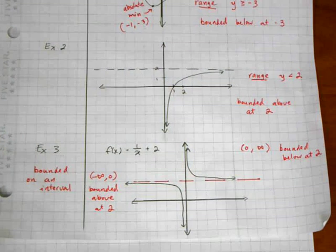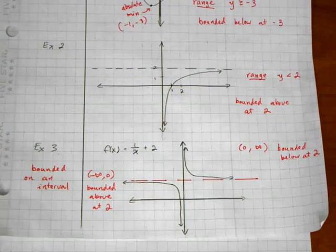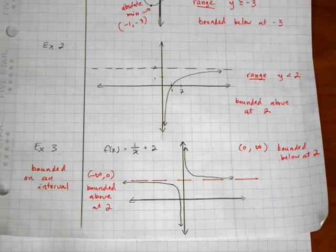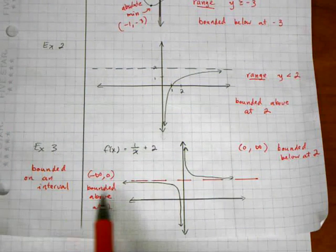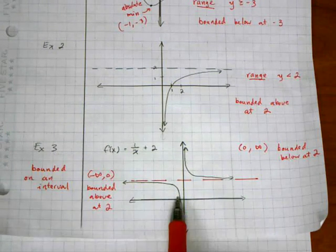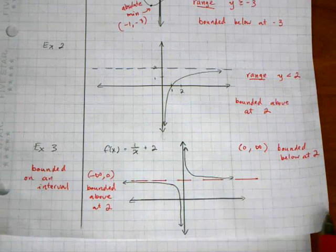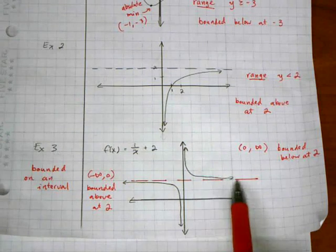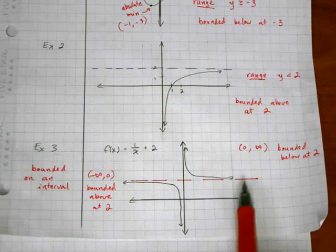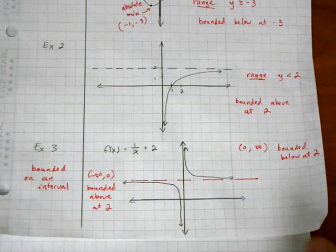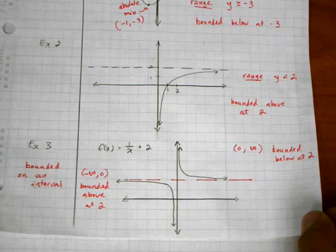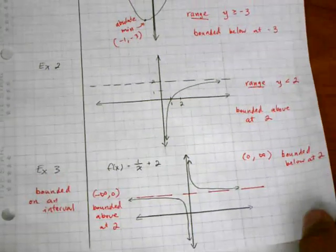The function itself is not bounded overall, but if you give it a particular interval it is bounded. From negative infinity to zero it is bounded from above, and from zero to positive infinity it is bounded from below.